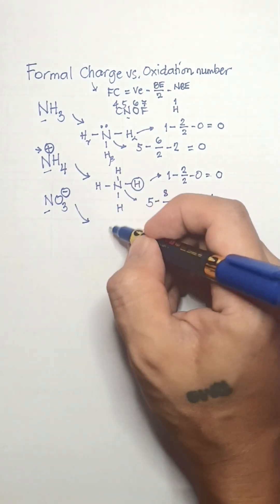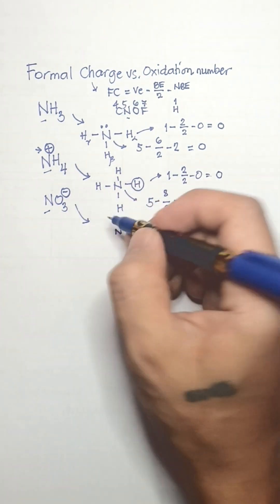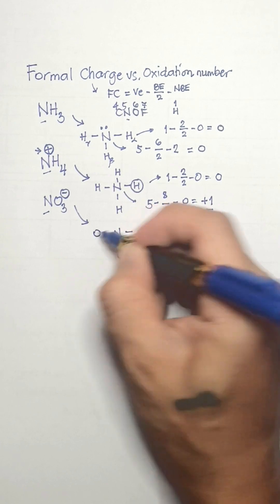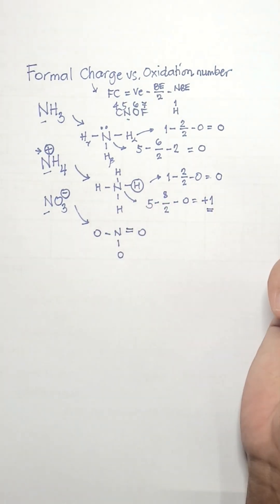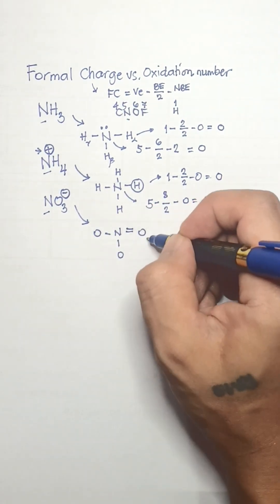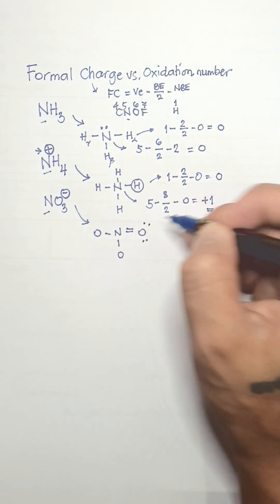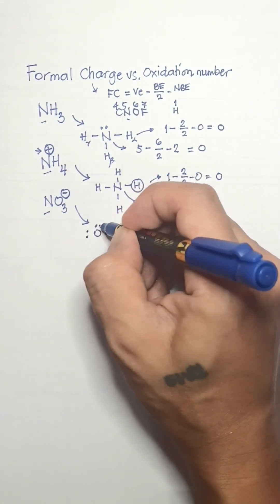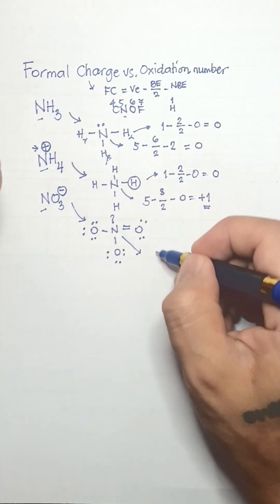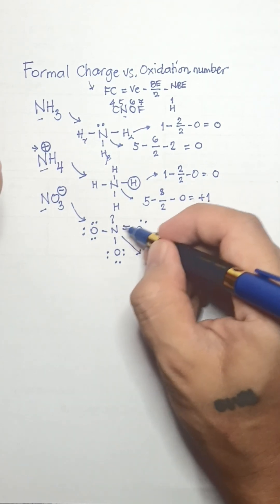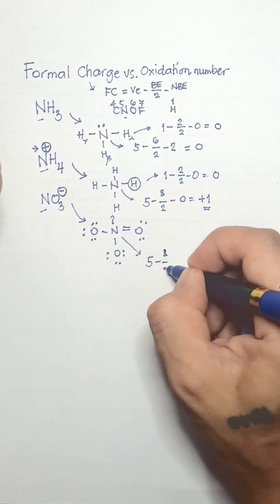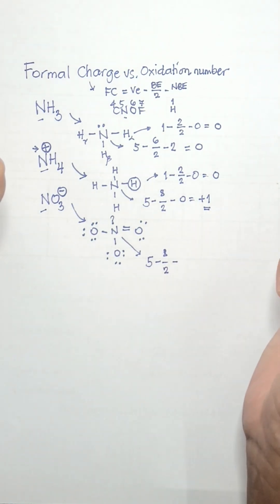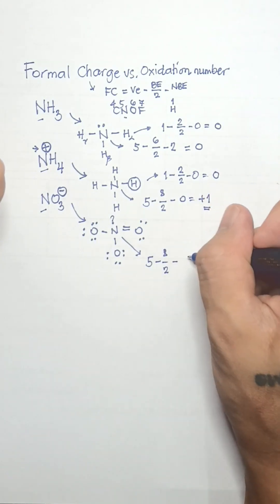Now for nitrate ion, our central atom is nitrogen, surrounded by 3 oxygen atoms. One oxygen atom is doubly bonded to nitrogen, while the others are singly bonded. The number of electrons around our oxygen atoms are not similar, as we can notice in this diagram. For the formal charge of nitrogen: 5 minus 8 over 2 minus 0, giving positive 1.